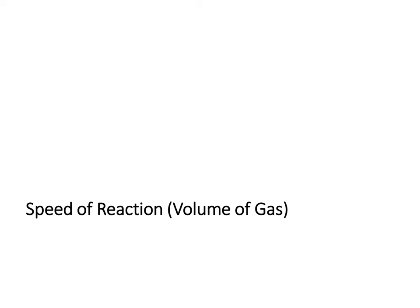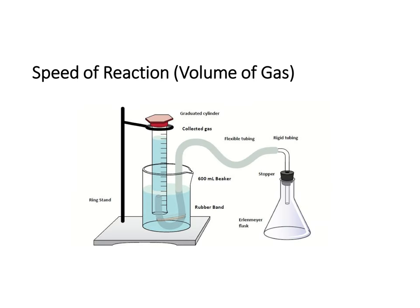Another type of speed of reaction experiment measures the volume of gas produced — either timing how long it takes to produce a fixed volume of gas, or measuring the volume of gas produced in a fixed duration. The experimental setup typically includes a delivery tube leading to an inverted measuring cylinder immersed in water, using the displacement of water method. As gas is produced it displaces the water in the measuring cylinder, and from the reading you can determine how much gas has been produced after a certain period of time.